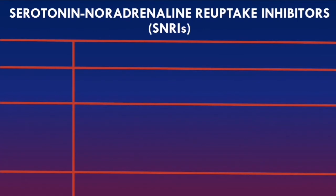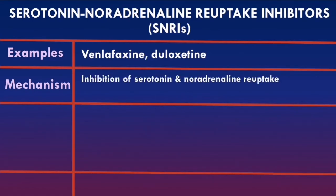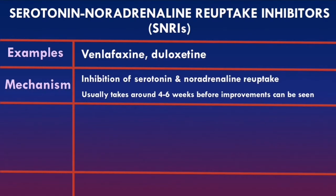Examples of SNRIs include venlafaxine and duloxetine. Interestingly, duloxetine is also used to treat neuropathic pain such as in diabetic neuropathy and fibromyalgia. Their mechanism is inhibiting both serotonin and noradrenaline reuptake, increasing the availability of both neurotransmitters. Similar to SSRIs, SNRIs usually take around 4-6 weeks before improvements are seen. Side effects of SNRIs are very similar to SSRIs and include insomnia, nausea, and sexual dysfunction.